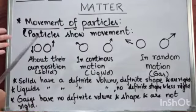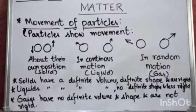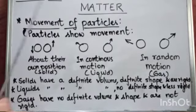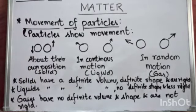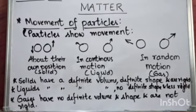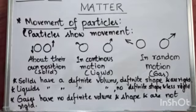Because particles are tightly packed. Liquids have a definite volume, but they do not have a definite shape — they take the shape of the container in which they are poured. And they are less rigid compared to solids. Gases do not have any definite volume, do not have any definite shape, and they are not rigid.